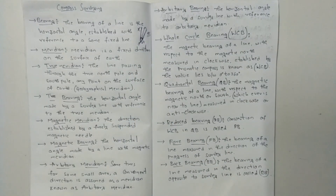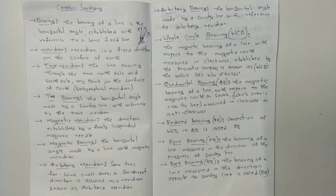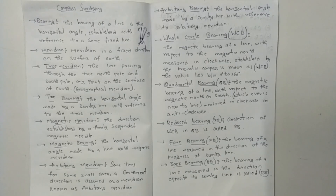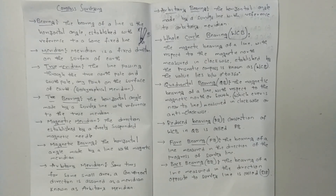The meridian is the fixed direction on the surface of the earth. The fixed directions are the north direction, south direction, east direction. The bearing is measured with reference to this fixed line.